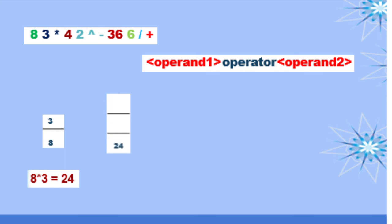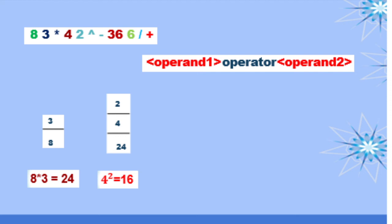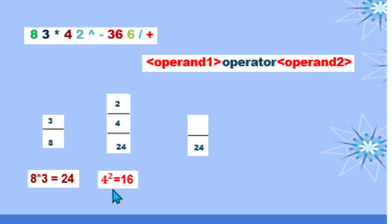We now have 24 on the stack and continue scanning. We have 4 — it is an operand, so we push it on our stack. Then 2 — it is also an operand, so we push it on our stack. Then we have our exponent symbol. This is an operator, so we pop out the last two operands and perform the operation. So 4 is operand 1 and 2 is operand 2. We perform 4 raised to the second power, which is equivalent to 16. We then push the obtained value 16 on our stack.